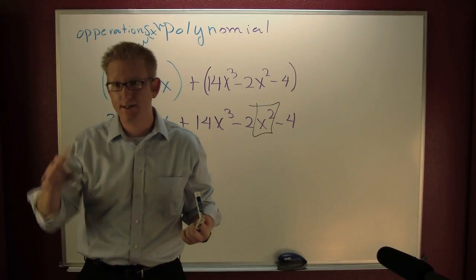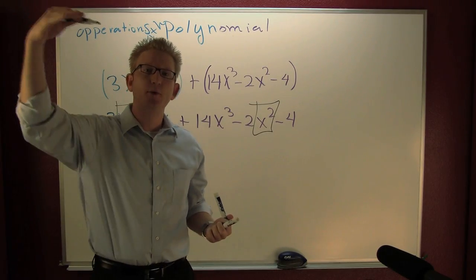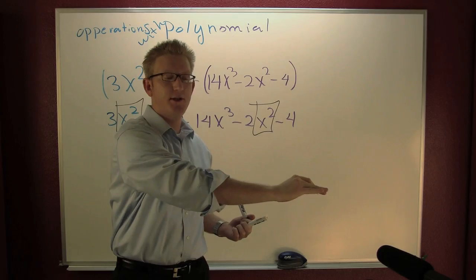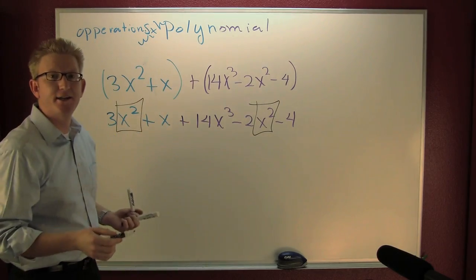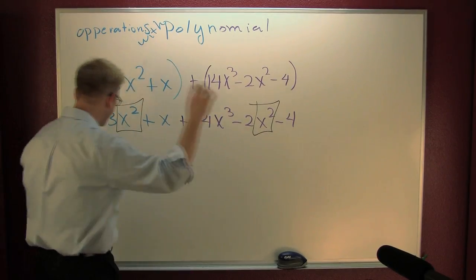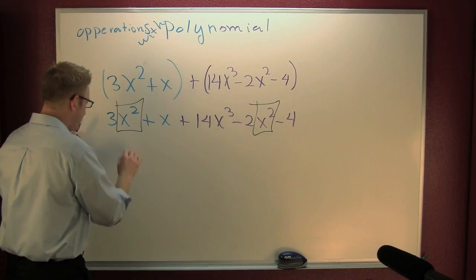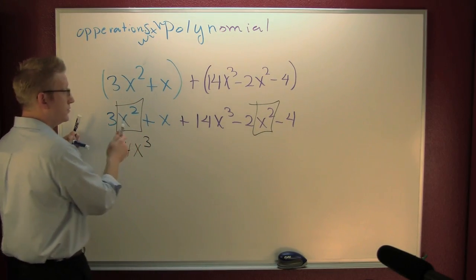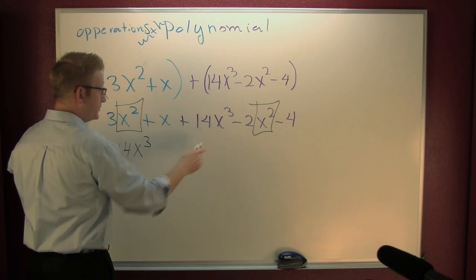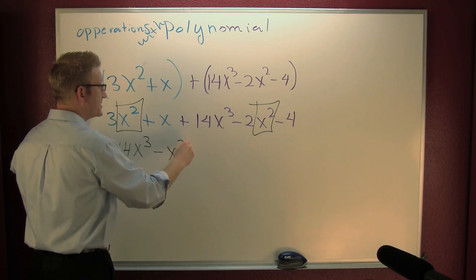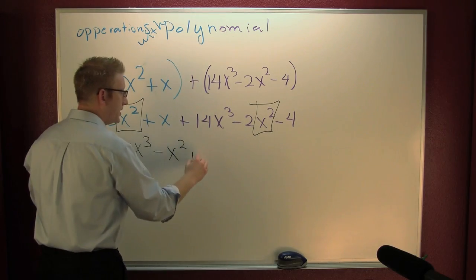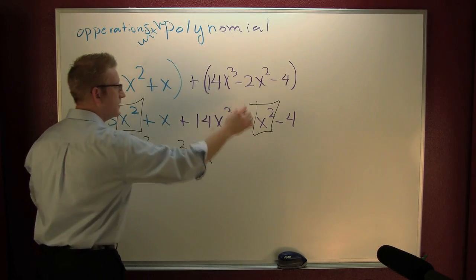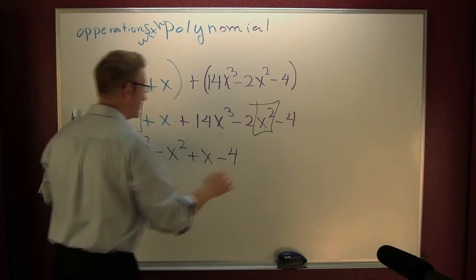So I'm going to write it in descending order. Descending order is when we write the degrees of monomials in descending order, meaning that they're going down. So I'm going to put my 14x to the third. What's 3 minus 2? 1x squared plus x minus 4.